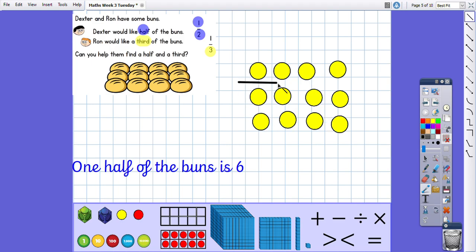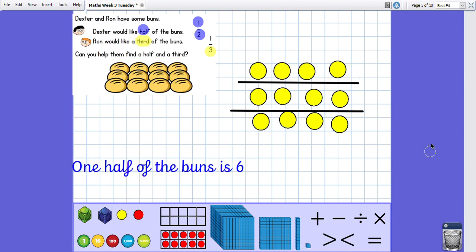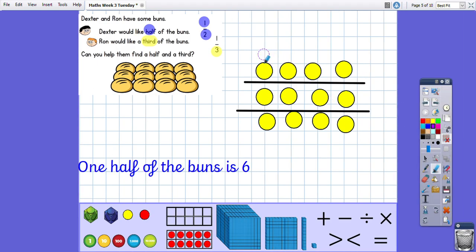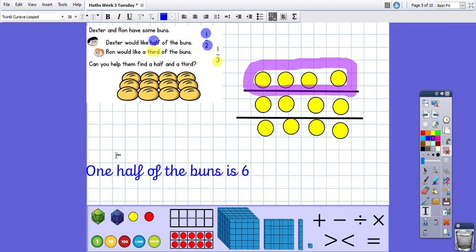Let's try horizontally. One, two, three. I've got three groups. I just need to look at one of the groups. So I'm just going to take the top group. I have got four. So I know that one third of the buns is four.